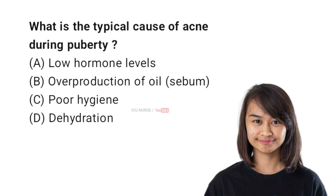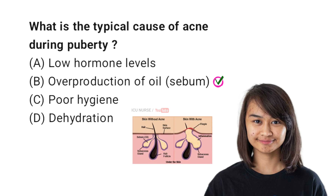What is the typical cause of acne during puberty? A: Low hormone levels, B: Overproduction of oil (sebum), C: Poor hygiene, D: Dehydration. The correct answer is B: Overproduction of oil. During puberty, increased hormone levels — androgens — cause the sebaceous glands to produce more oil, leading to clogged pores and acne.